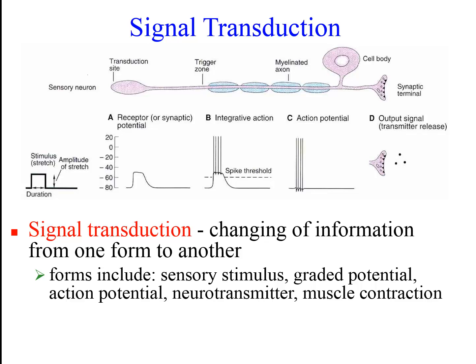The forms of information found in the nervous system include various types of sensory stimuli, such as light, odor, taste molecules, pressure, etc., as well as graded potentials, action potentials, neurotransmitter release, and muscle contraction.